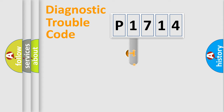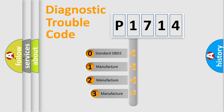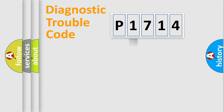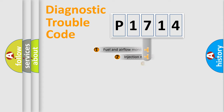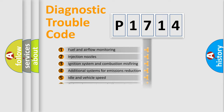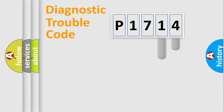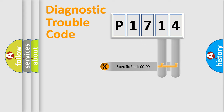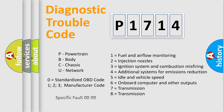This distribution is defined in the first character of the code. If the second character is expressed as zero, it is a standardized error. In the case of numbers 1, 2, or 3, it is a manufacturer-specific error. The third character specifies a subset of errors. This division is valid only for standardized DTC codes, and only the last two characters define the specific fault of the group.